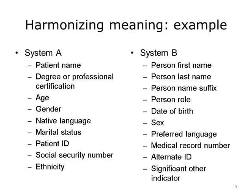Imagine System B has person first name, person last name, person name suffix, person role, date of birth, sex, preferred language, medical record number, alternate ID, and significant other indicator. How would you map the demographics? Semantic interoperability is surprisingly difficult. Most likely, different people came up with different solutions. Maybe you found additional questions about the meaning of each field. In the end, there isn't a good map between System A and System B, and we were only talking about two systems with less than a dozen fields each.